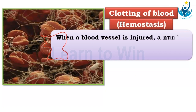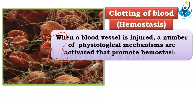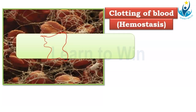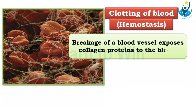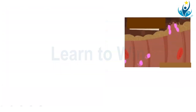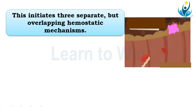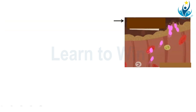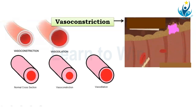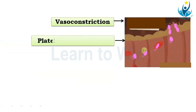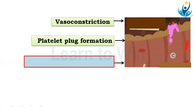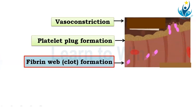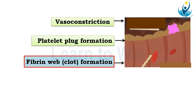When a blood vessel is injured, a number of physiological responses occur simultaneously, ultimately promoting hemostasis. The breakage of a blood vessel exposes collagen proteins to the blood, which initiates three separate overlapping mechanisms: the first is vasoconstriction, the second is platelet plug formation, and the third is fibrin clot formation. All three steps happen when there is a breakage in the blood vessel.